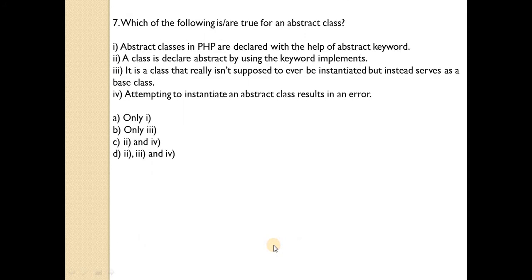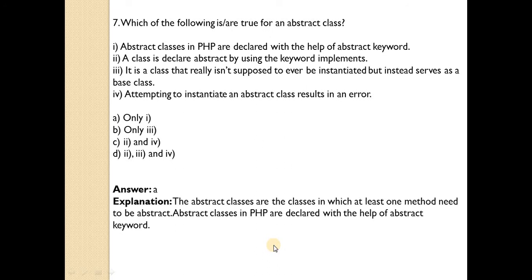Which of the following are true for an abstract class? Answer is A — abstract classes in PHP are declared with the help of the abstract keyword. Two key criteria: first, the abstract keyword is used to create abstract classes; second, abstract classes must have at least one abstract method. The remaining three options are false.